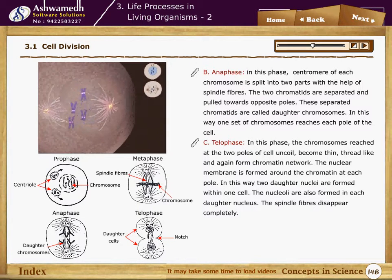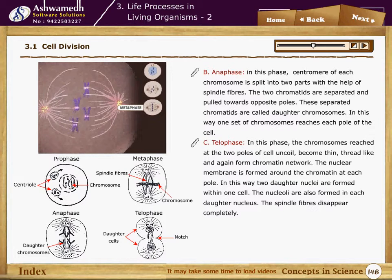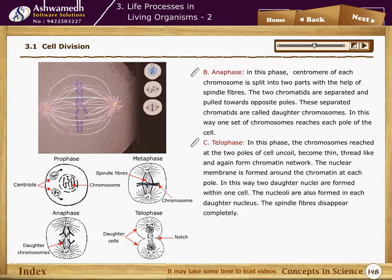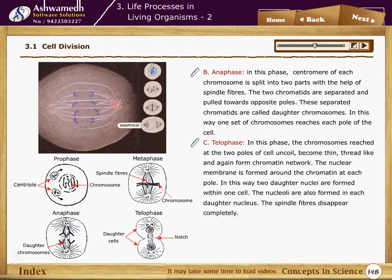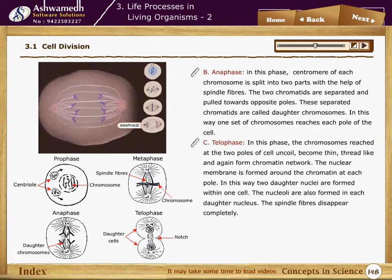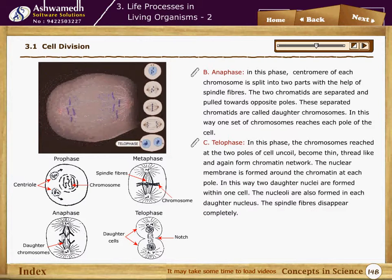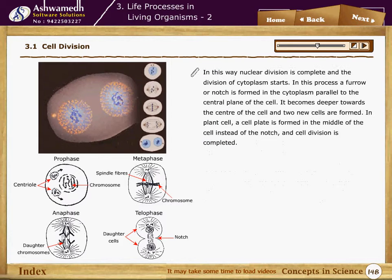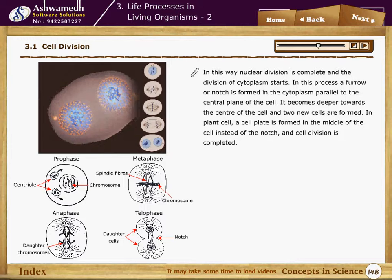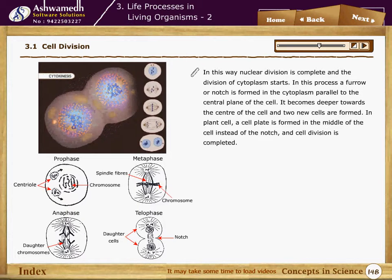In telophase, the chromosomes reach the two poles of the cell, uncoil, become thin thread-like structures, and again form a chromatin network. The nuclear membrane forms around the chromatin at each pole, resulting in two daughter nuclei within one cell. Nucleoli are also formed in each daughter nucleus, and the spindle fibers disappear completely. In this way, nuclear division is complete.